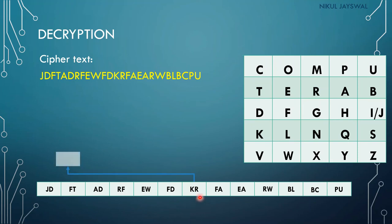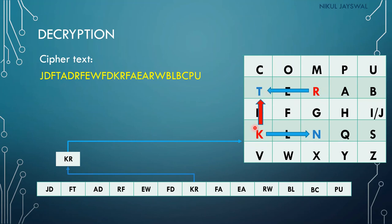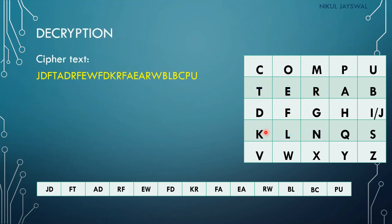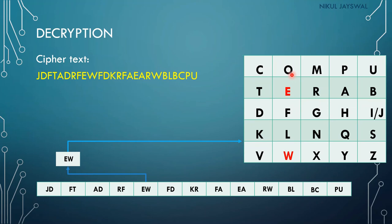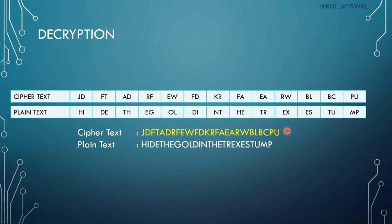For example, decrypting KR: find K and R in the key square, identify the row-wise corner — K gives N and R gives T, so KR decrypts to NT. For EW: E and W are in the same column, so for decryption we go upward — E becomes O and W becomes L, giving us OL. This is how the cipher text is converted back to plain text.